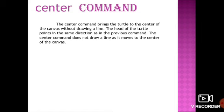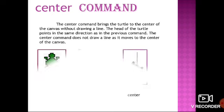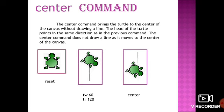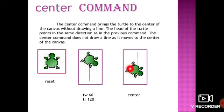The Center command does not draw a line as it moves to the center of the canvas. Whenever you use the Center command, the turtle may be anywhere on the canvas — it comes to the center but without drawing any line. The head of the turtle does not change; the position of the head remains as it is, only the turtle moves to the center. For example, after commands like Forward 60, Turn Right 120, and Center — the turtle comes to the center but its head direction remains the same.